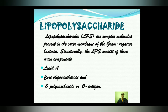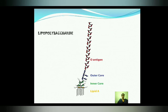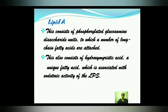Lipopolysaccharides (LPS) are complex molecules present in the outer membrane of Gram-negative bacteria. Structurally, LPS consists of three main components: Lipid A, core oligosaccharides, and O-polysaccharides (O antigen). The structure shows lipid A at the bottom, then inner core, outer core, and O antigen on the outside.